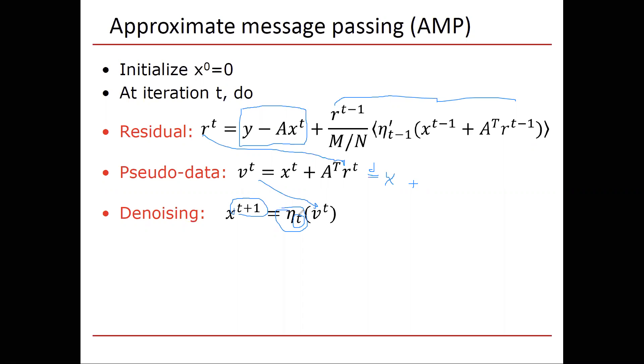And the reason for that is that initially we're going to have more noise in this scalar channel connecting v and x. And as we iterate, hopefully, well, typically what happens is that the amount of noise in v goes down over the first several iterations, and eventually it converges toward a noise floor. And then the AMP is somewhat stable.